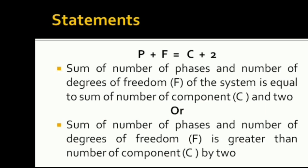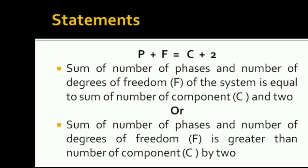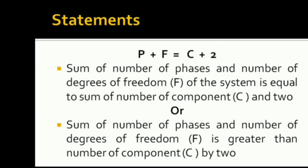Here, P is number of phases, F is number of degrees of freedom, and C is number of components. The sum of number of phases and degrees of freedom of the system is equal to the sum of number of components and 2. This is the statement of phase rule. Alternatively, P plus F is greater than C by 2, because adding 2 to the right-hand side makes both sides equal.